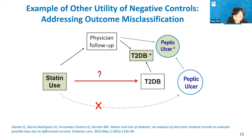Identifying the appropriate negative control is very important and based on substantial knowledge. You need to think through the study's purpose and study design—whether it's a cohort study or a case-control study—as different designs may have different considerations about the study population and your exposure and outcomes.